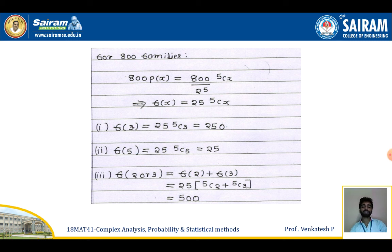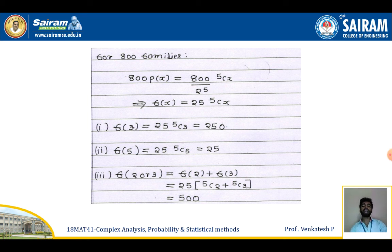For either 2 or 3 boys, we compute F(2) + F(3). Since 25 is a common factor, this equals 25 × (5C2 + 5C3). On simplification we get 500, so 500 families will have either 2 or 3 boys.